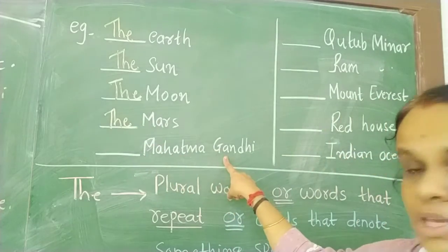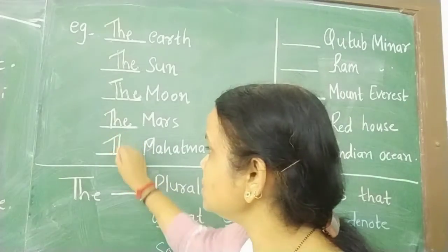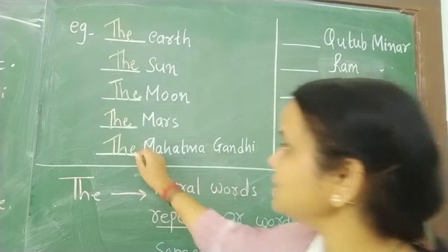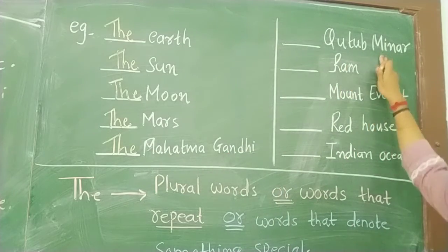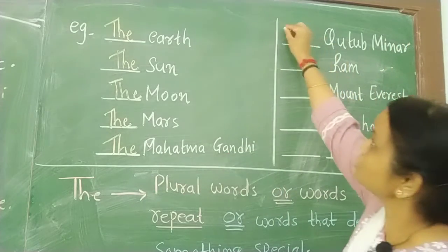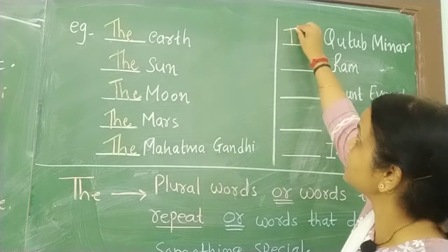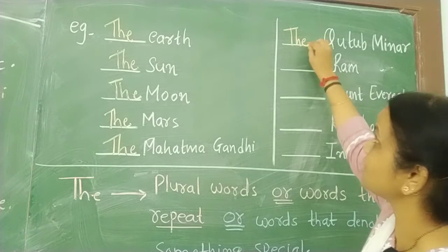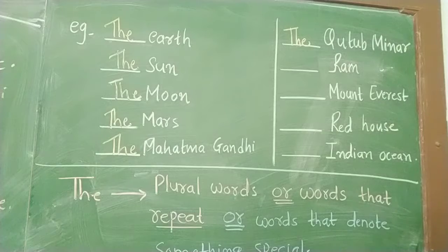Mahatma Gandhi — unique personality, so the Mahatma Gandhi. Afterwards Kutub Minar. Kutub Minar also unique, so Kutub Minar is the place, right? Building ka naam hai Kutub Minar. Minaret hai — Kutub Minar is a minaret.